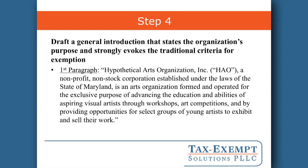So my first paragraph says: 'Hypothetical Arts Organization, Inc., a nonprofit non-stock corporation established under the laws of the state of Maryland, is an arts organization formed and operated for the exclusive purpose of advancing the education and abilities of aspiring visual artists through workshops, art competitions, and by providing opportunities for select groups of young artists to exhibit and sell their work.' We've provided a very clear framework that makes it easy for the IRS to know what type of organization this is and how to analyze the application.